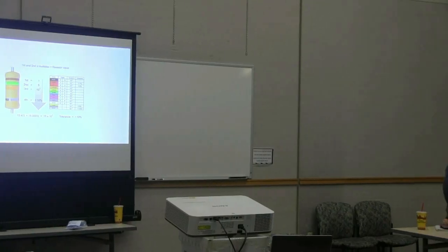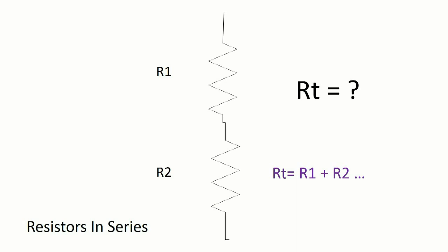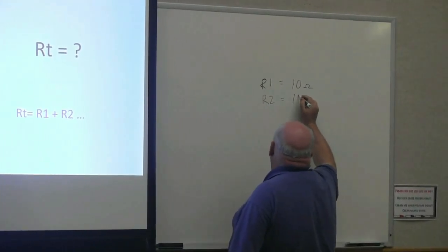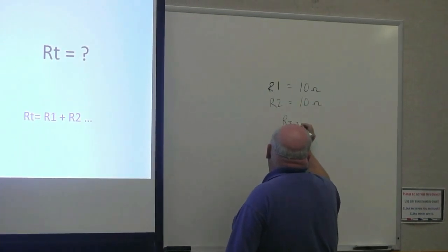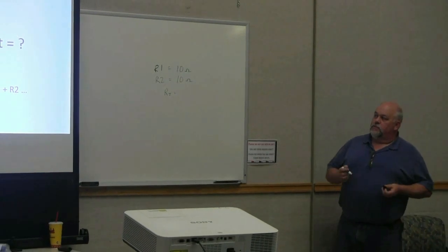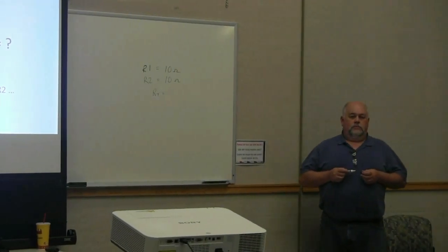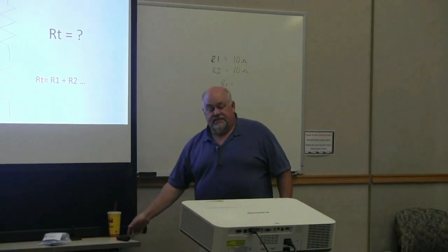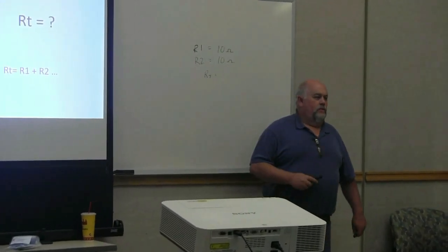That's pretty straightforward. This is not on your test — the reason we're doing this is because things that are on your test start here. Our first little formula of the night is resistors in series. If R1 equals 10 ohms and R2 equals 10 ohms, R-total equals R1 plus R2 — so the answer is 20 ohms. Everybody good with that? This is stuff to understand what we're doing tonight.